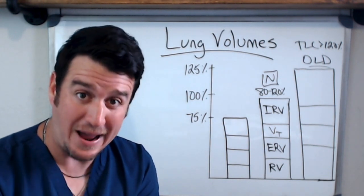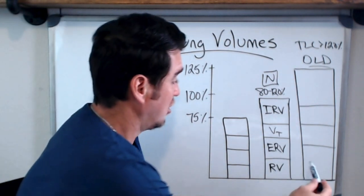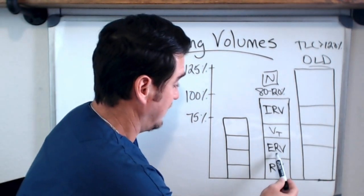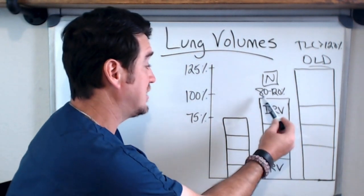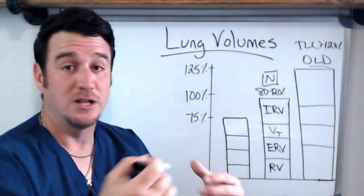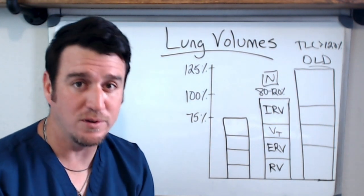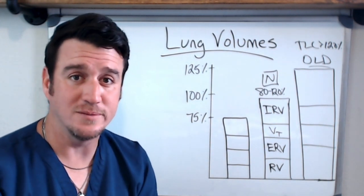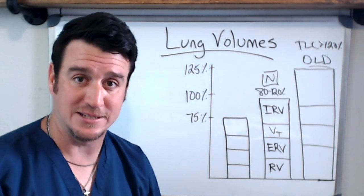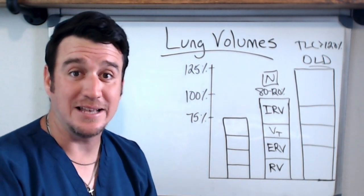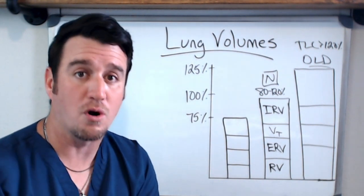Remember, a capacity is all volumes put together. So residual volume, expiratory reserve volume, tidal volume, and IRV all together make up total lung capacity. You have four volumes and four capacities. A capacity is made up of two or more volumes.